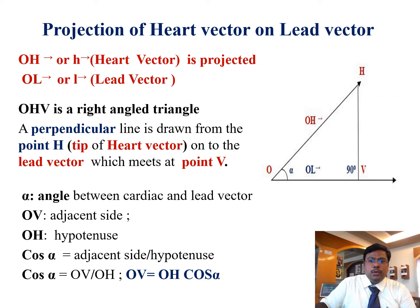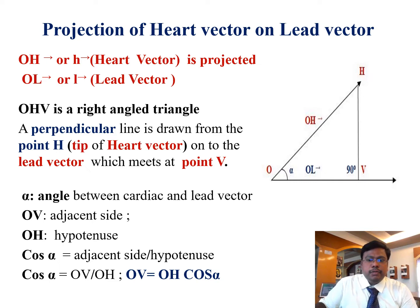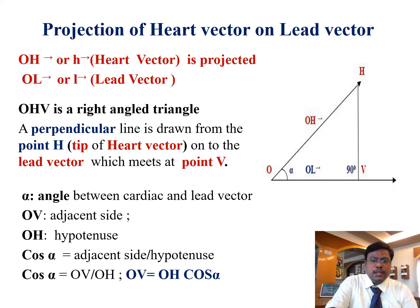From the diagram, OH denotes the heart vector. The heart vector is projected onto the lead vector. If a perpendicular line is drawn from the tip of the heart vector, it meets at point V, so OV denotes the voltage recorded in the particular lead. Deriving from the diagram: cos alpha equals adjacent side by hypotenuse, therefore OV equals OH times cos alpha. OV denotes the voltage recorded in the particular lead.